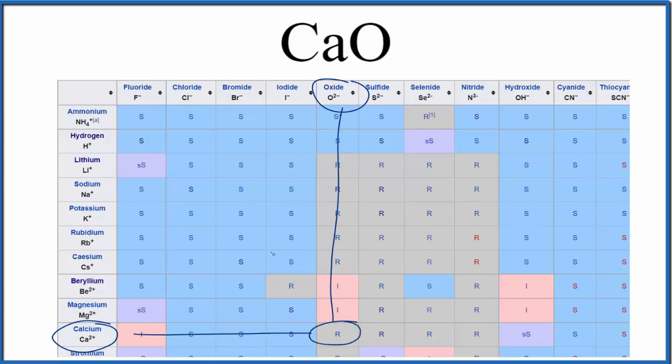And we see that R there, that R means when we put calcium oxide in water it's going to react, it's going to form a new substance. So it doesn't dissolve and we can't say that it's soluble. We can only say that it reacts with water.